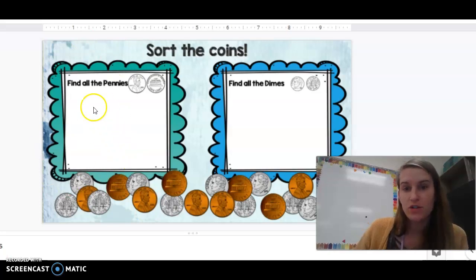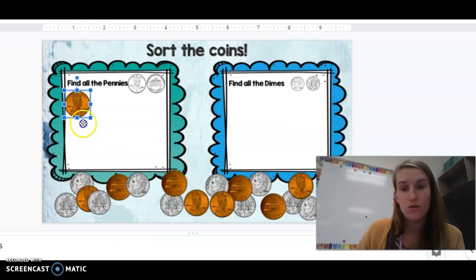In the first square, it says find all the pennies. And in the next one, it says find all the dimes. You're going to look at the coins down here. You're going to click the coin to activate it and then move the coin to where it belongs.